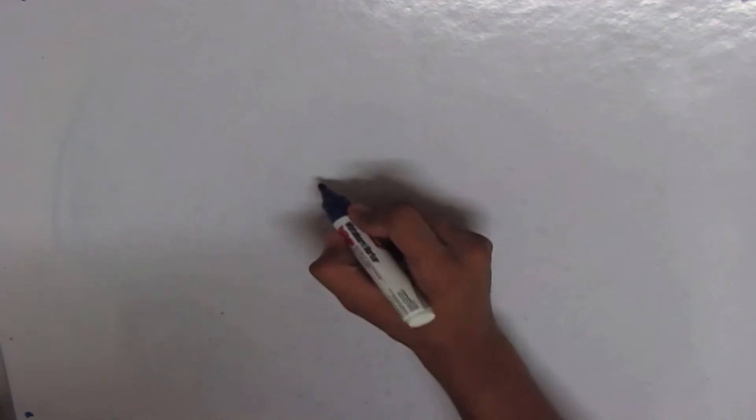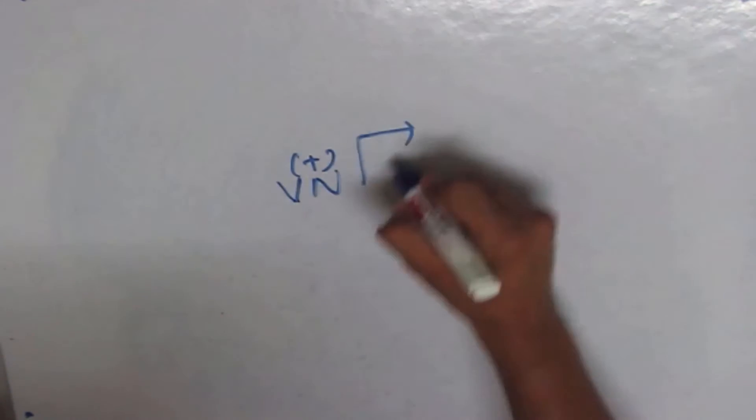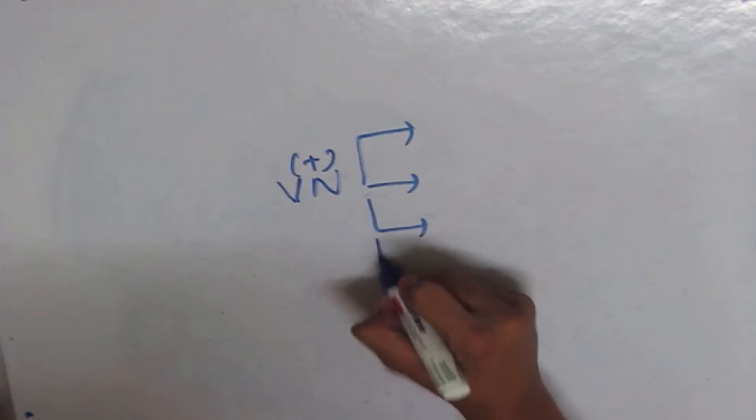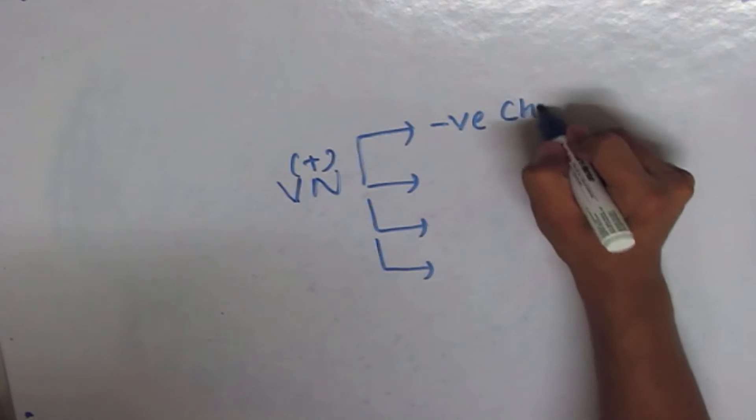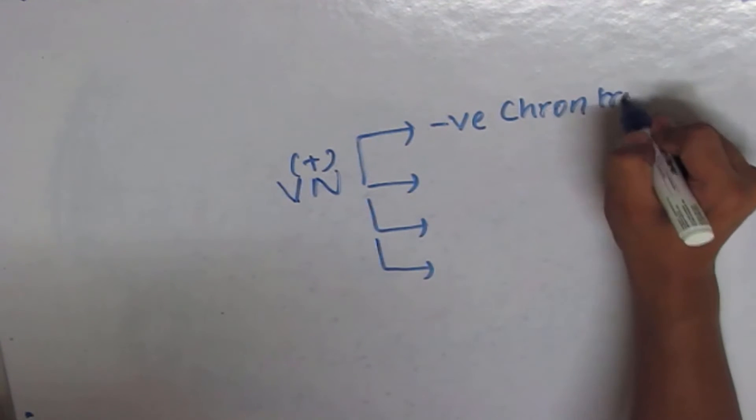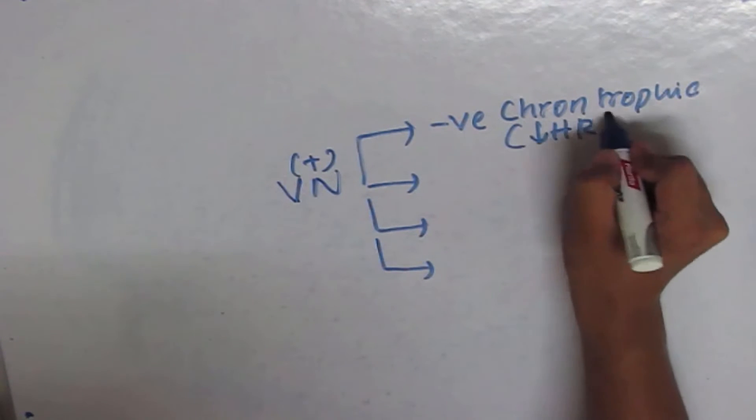Now, I will tell you what happens when the vagal nerve is stimulated. When vagal nerve is stimulated, it results in the following four states. It creates negative chronotropic, that is the decrease in heart rate as we all know.